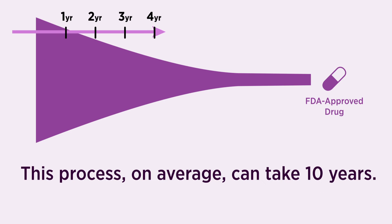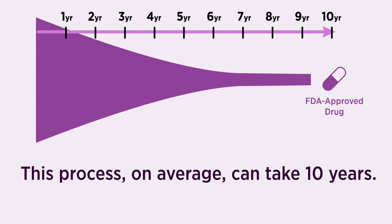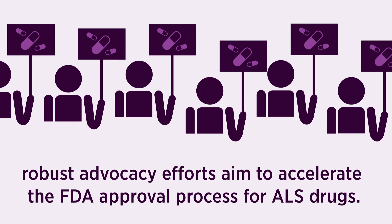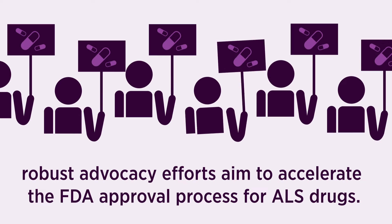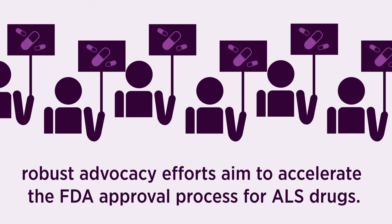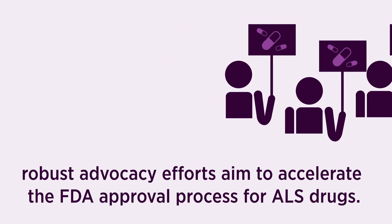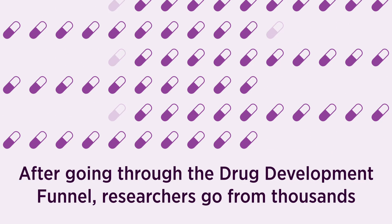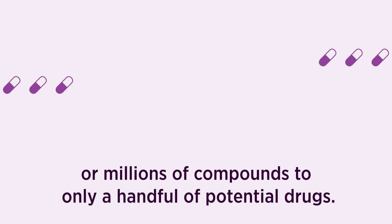If a drug passes a Phase 3 trial, it can be submitted to the FDA for approval. This process, on average, can take 10 years. Because ALS is such a devastating condition, robust advocacy efforts aim to accelerate the FDA approval process for ALS drugs. After going through the drug development funnel, researchers go from thousands or millions of compounds to only a handful of potential drugs.